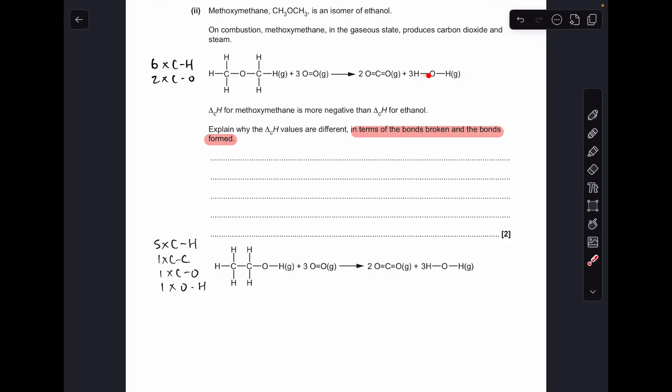So it's all about the bonds that need to be broken in the organic substance. And I've itemized them there. So in methoxymethane, we've got to break six moles of CH bonds and two moles of CO single bonds. Whereas in ethanol, you've got more bonds to break. So here's the first part of my answer. Less energy is needed to break the bonds in methoxymethane than in ethanol. And then the second part is just to get across that the bonds that are formed are exactly the same. So exactly the same bonds formed. So the energy released will be the same.